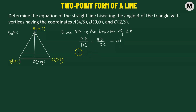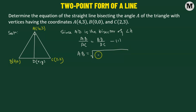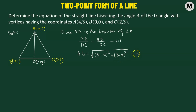Now we can immediately find out the length of AB. So AB is going to be, using the distance formula, the square root of the difference of the X coordinates — that's 4 minus 0 squared — added to the difference of the Y coordinates — that's 3 minus 0 squared. This gives us a value of 5.